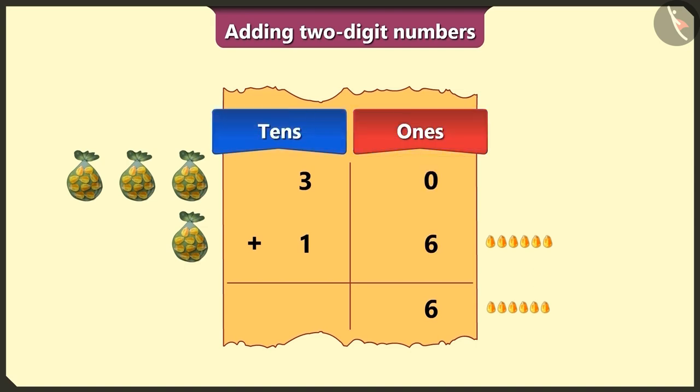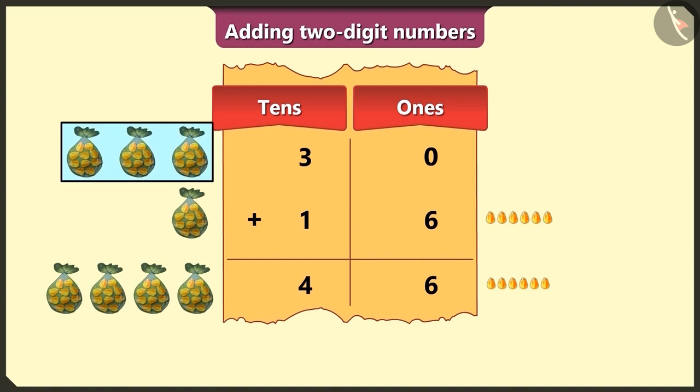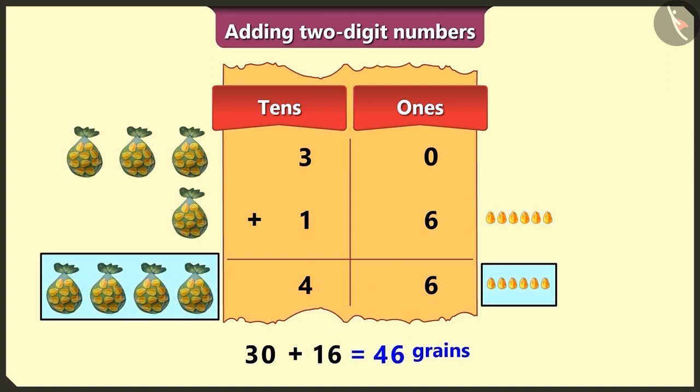Now, in the tens box, we will add the numbers 3 and 1, the total of which will be 4. So, how many total number of grains are here now? Yes, here there are 3 tens or 30, and if we add 1 ten and 6, that is 16, we get a total of 46 grains. Well done, Peeloo.